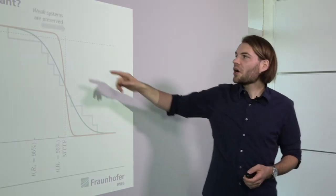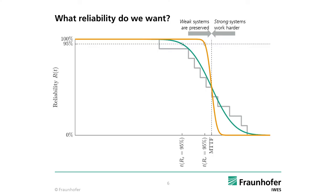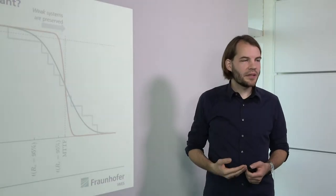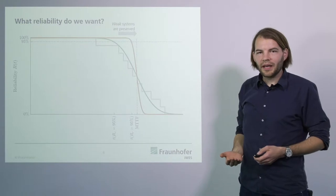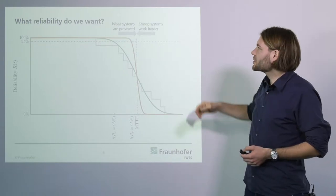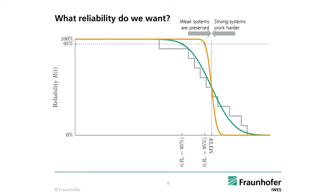But how can we change our reliability function? We have to preserve weak systems — systems that are at a site exposed to stronger winds that have seen higher loads in the past. And we can increase the loads on a strong system, which might have seen less loads or which might have stronger components due to manufacturing variance.